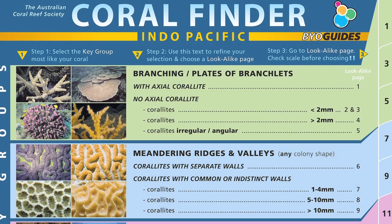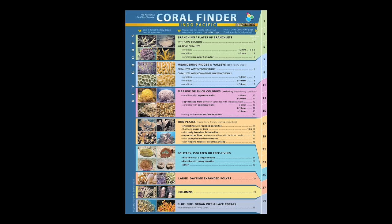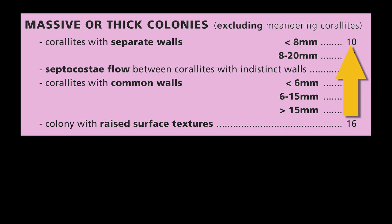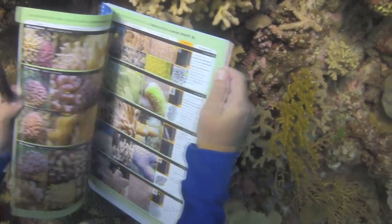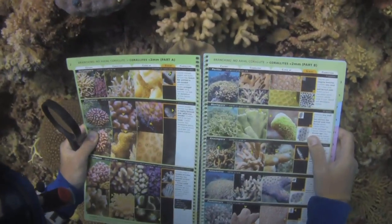The Coral Finder uses a three-step process: choose a key group, then choose a look-alike page, go to that look-alike page, compare and confirm characters, and check the scale. Once you have chosen the key group you then need to choose a look-alike page. You can do this by consulting the plain language prompts, which may ask you to judge the scale or some visual features of the coral. This gives you the look-alike page number to check out. Use the page tabs to select the page, and there before you will be a grid of images with five or six of the best bets of what this coral could be.